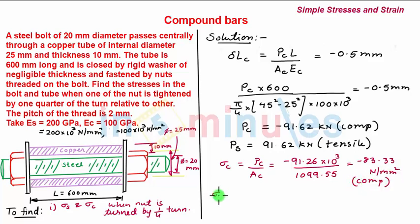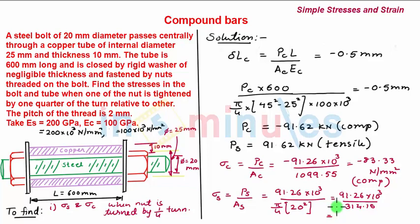Similarly, stress in the steel bolt σs equals Ps divided by As. Ps equals 91.26 × 10³ N, and As equals π/4 × 20² equals 314.15 mm². So σs equals 91.26 × 10³ divided by 314.15 equals 291.64 N/mm², which is tensile.